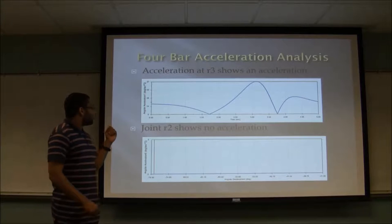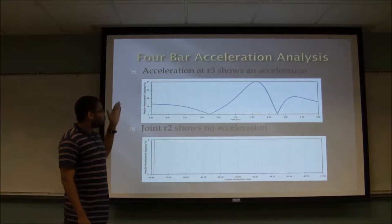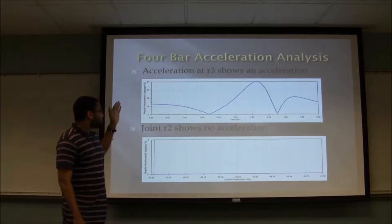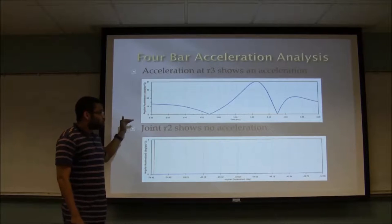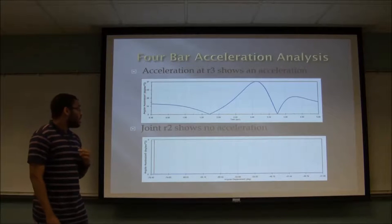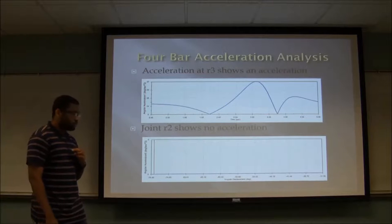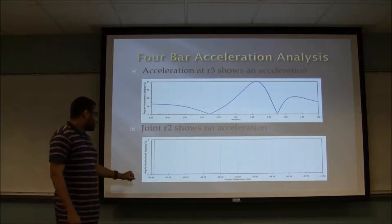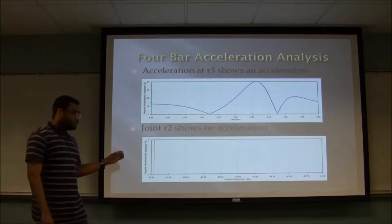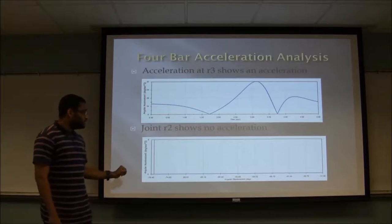The angular acceleration for R3, as well as these graphs for R3 in relation to time, were to show us for purposes of our calculation how well it is relating to the problem statements that we were given. And for R2, as was shown before, the velocity was constant, so the acceleration would therefore be zero.